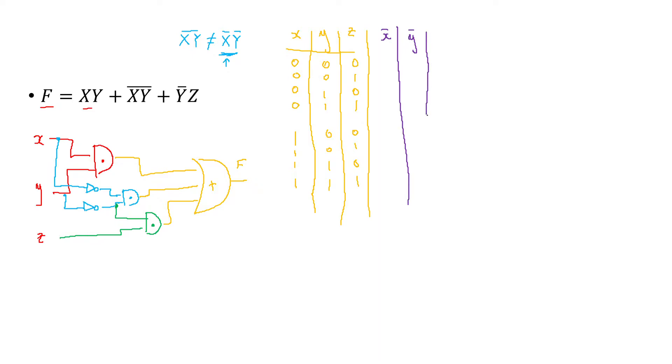NOT X is gonna be 1, 2, 3, 4 and this would be 1, 2, 3, 4. NOT Y is gonna be 1, 1, 0, 0 and 1, 1, 0, 0.